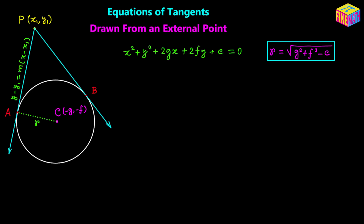Let's write the common equation of the tangent lines using the point-slope form: y minus y sub 1 equals m times x minus x sub 1. We already know the coordinates x sub 1 and y sub 1, and m is the unknown slope. We actually need two values of m, so we're looking for a quadratic equation in m from which we can calculate two possible values.